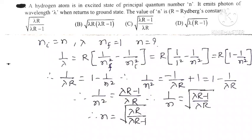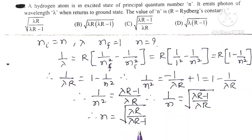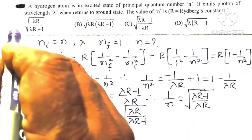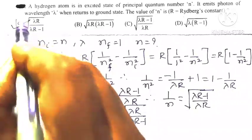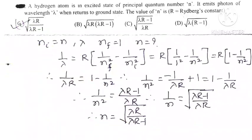So the answer is n equals lambda R divided by the square root of (lambda R minus 1), which corresponds to option A: lambda R times the square root of lambda R upon (lambda R minus 1). Option A is the correct option for this question.